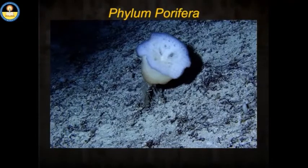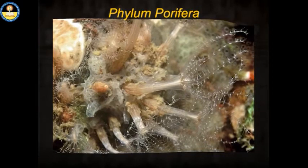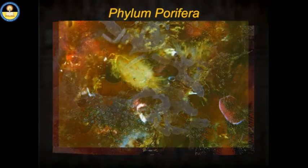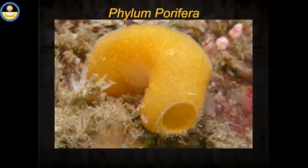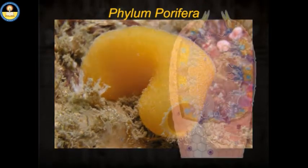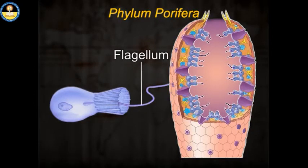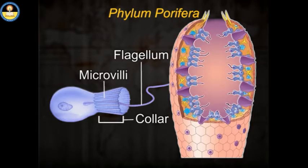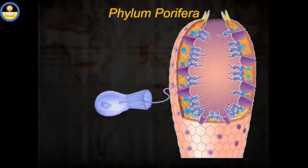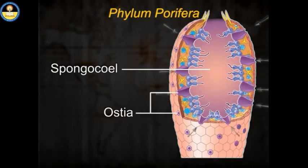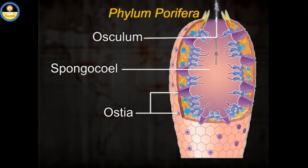Phylum Porifera. Animals under this phylum are commonly known as sponges. These are the simplest multicellular organisms. Their cells are loosely held together and they do not form tissues. These distinctive cells, choanocytes, line the interior body walls of sponges. These cells have a central flagellum surrounded by a collar of microvilli. Their flagellar beat creates active pumping of water through the sponge. Water enters its cavity through numerous openings called ostia and escapes out through the larger openings known as osculum.